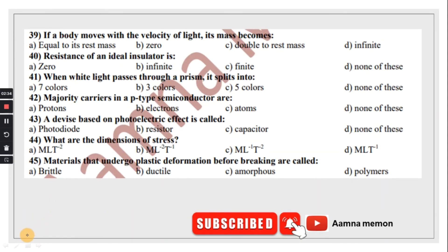If a body moves with the velocity of light, its mass becomes infinite. Resistance of an ideal insulator is infinite. When white light passes through a prism, it splits into seven colors. Majority carriers in a P-type semiconductor are holes. In N-type, there are electrons.